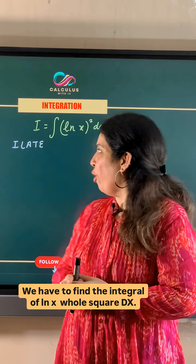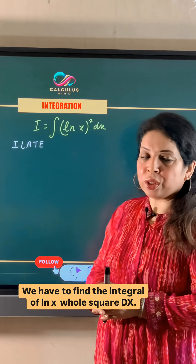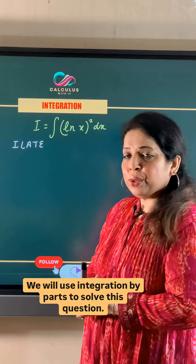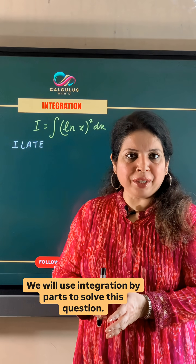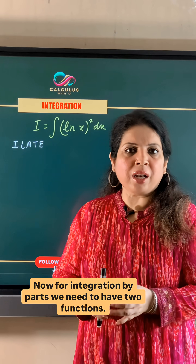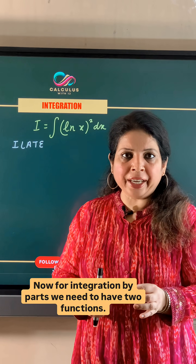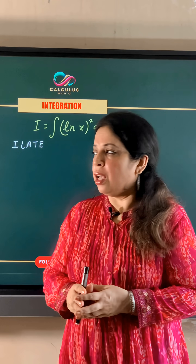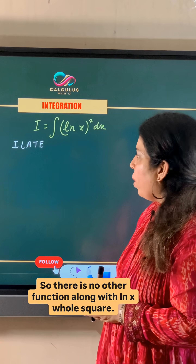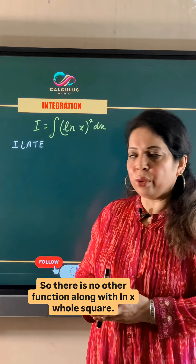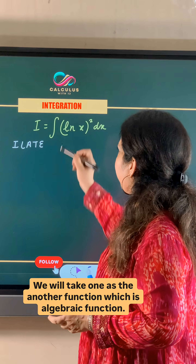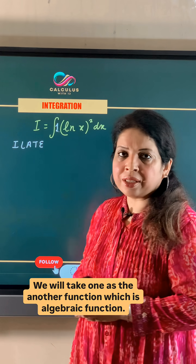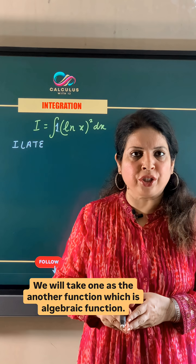We have to find the integral of (ln x)² dx. We will use integration by parts to solve this question. For integration by parts we need to have two functions. Since there is no other function along with (ln x)², we will take 1 as the other function, which is an algebraic function.